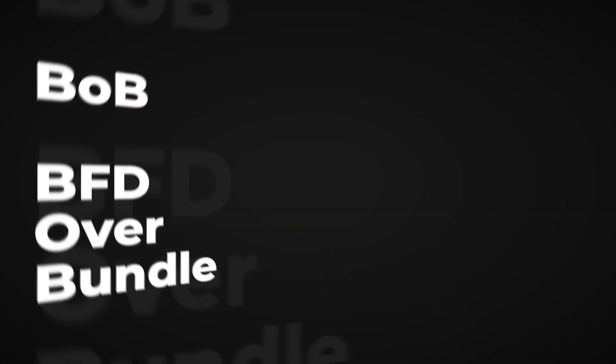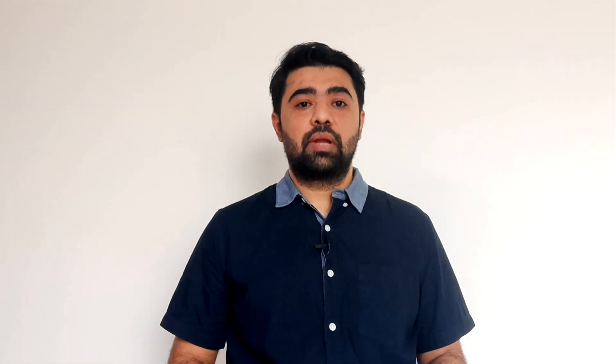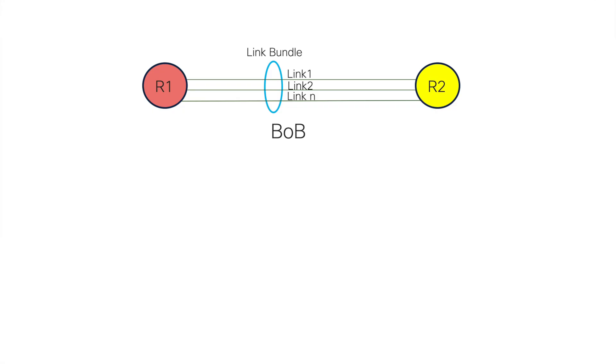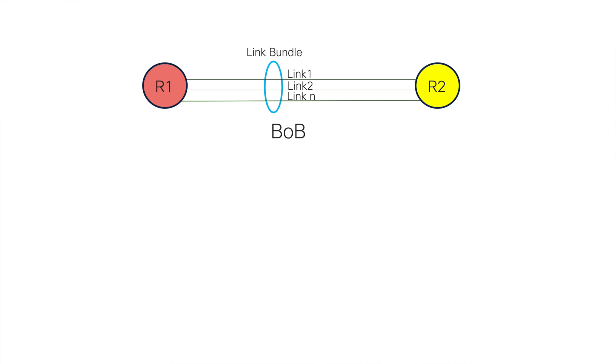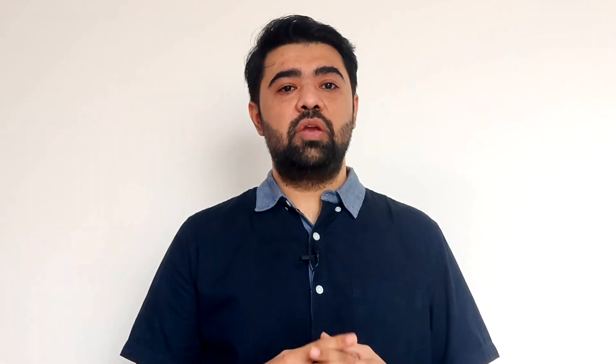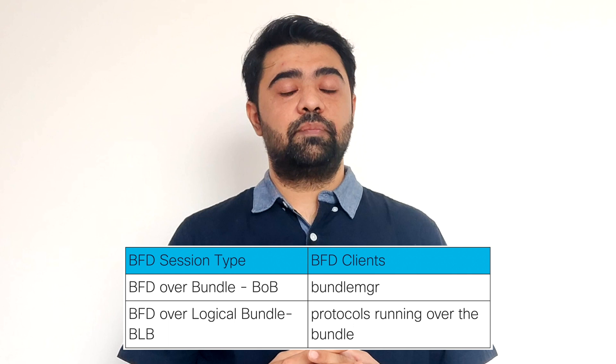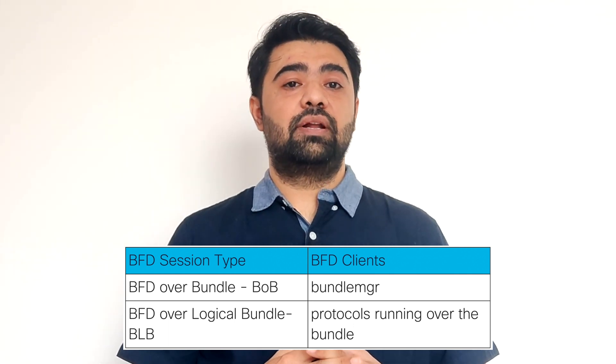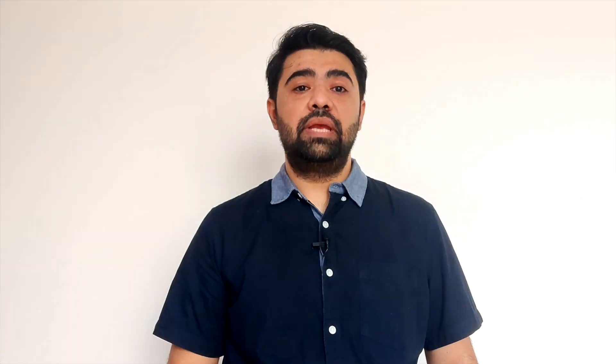It seems that BFD over bundle links is slightly more challenging. What are the options available today? BFD over bundle is a bit different — we have two flavors. BFD over bundle per member link is also known as BOP, and BFD over the entire bundle interface is known as BLB. In BOP, we consider BFD per member link, whereas in BLB we have BFD over the entire bundle interface. The BFD client in BOP is the bundle manager, while in BLB the BFD clients are the individual routing protocols. BOP is a single path session, whereas BLB is a multipath session.